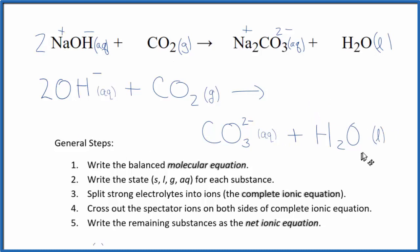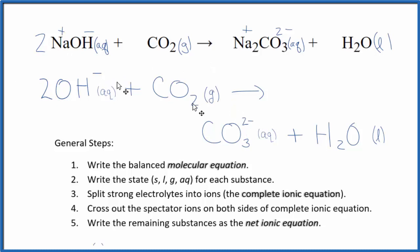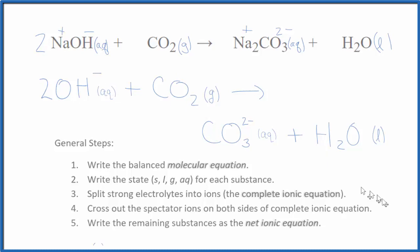This is the balanced net ionic equation for sodium hydroxide plus carbon dioxide. You'll notice that the charge is conserved — we have two negative charges on the reactant side and two negative charges on the product side. If you look at the atoms, we have the same number of each type of atom on both sides, so mass is conserved as well. This is Dr. B, and thanks for watching.